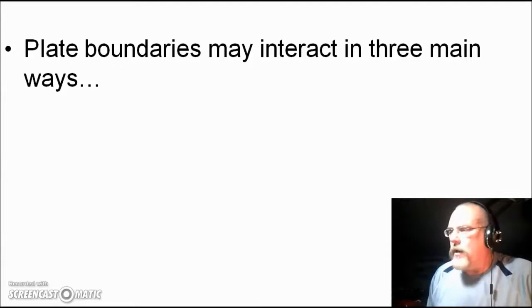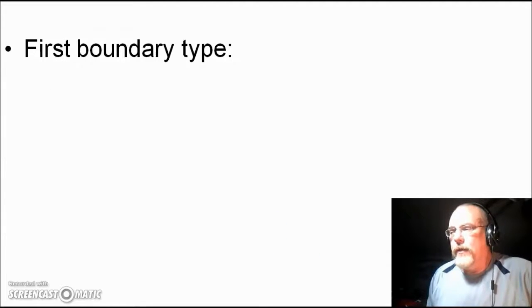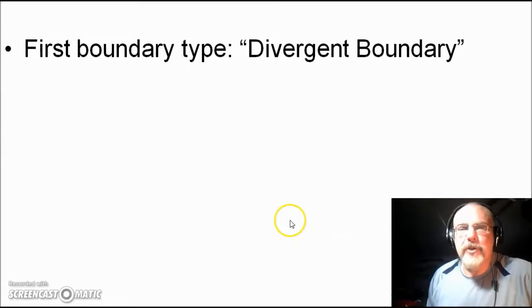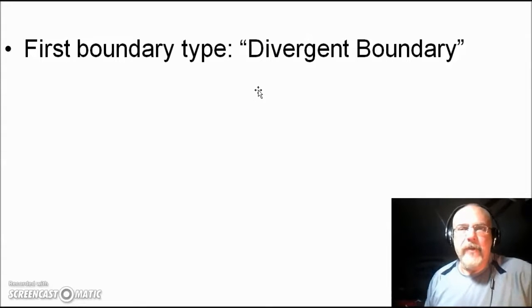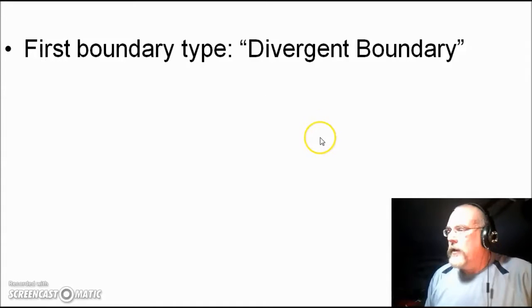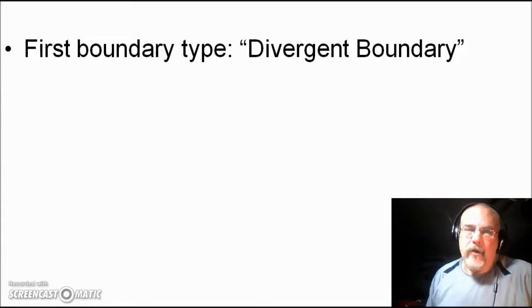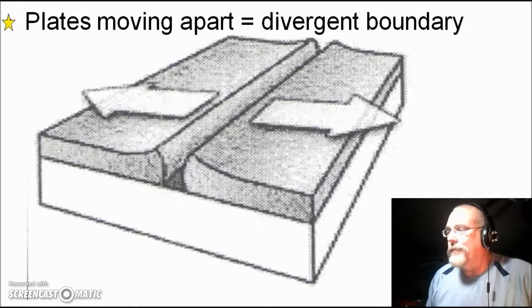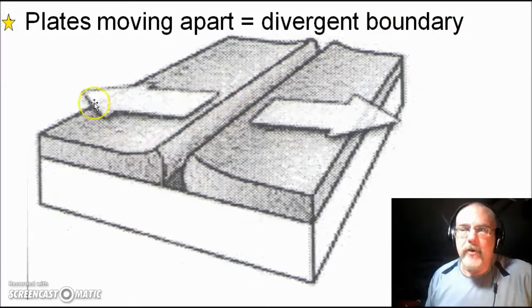Plate boundaries are going to interact in three different ways. The first type we'll talk about is called a divergent boundary. You may have heard 'divergent' from a recent novel and movie — the character Tris is considered divergent because she goes away from the rest of the group. Similarly, plates moving apart is called a divergent boundary.